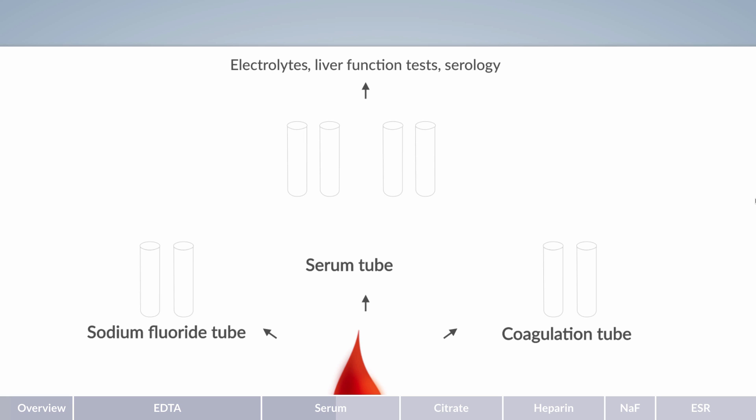Serum tubes are characterized by a red cap according to the international standard and a white cap according to the European standard. These tubes don't contain a serum gel separator. However, there are also tubes that contain a serum gel separator. These have a yellow cap according to the international standard and a brown cap according to the European standard.